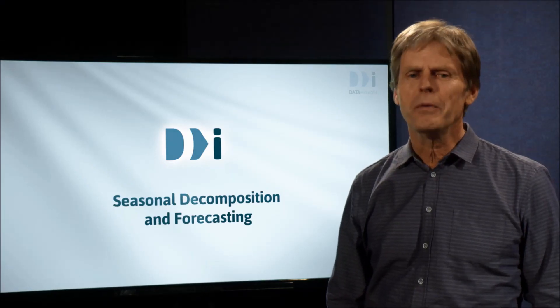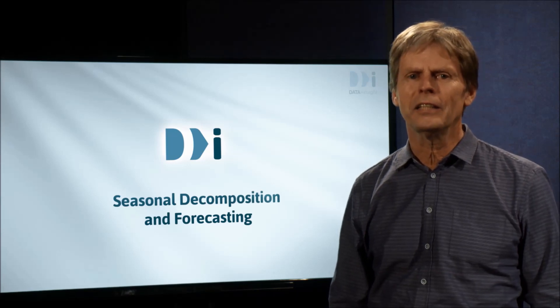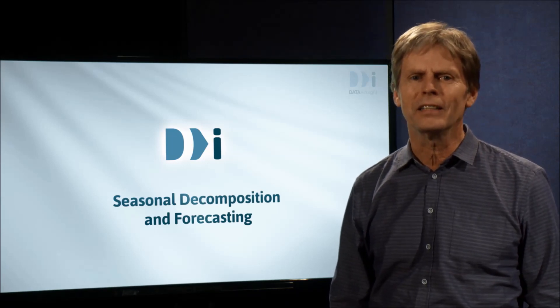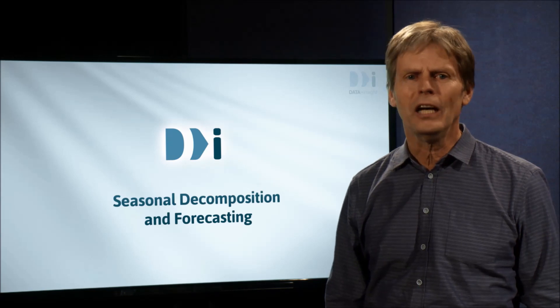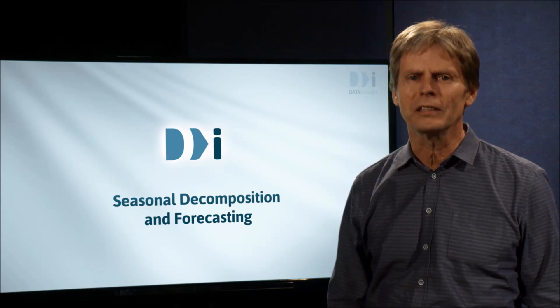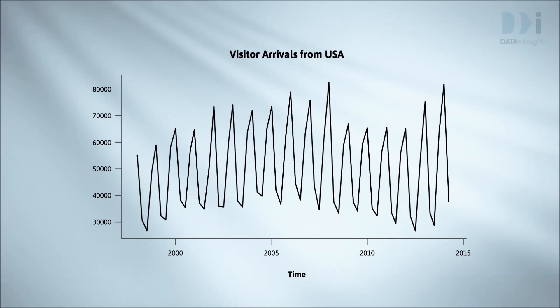Hello again. Last time we showed how plotting time series data with points joined up by lines helps us see seasonal patterns. We'll now move on to discuss decomposing a seasonal series into component parts. We'll emphasize investigating seasonal differences. We'll start by looking at the visitor arrivals from the US, a basic time series plot with a smoother added summarizing the trend. We're thinking of what we see in terms of an underlying trend with a seasonal pattern superimposed on top of it.